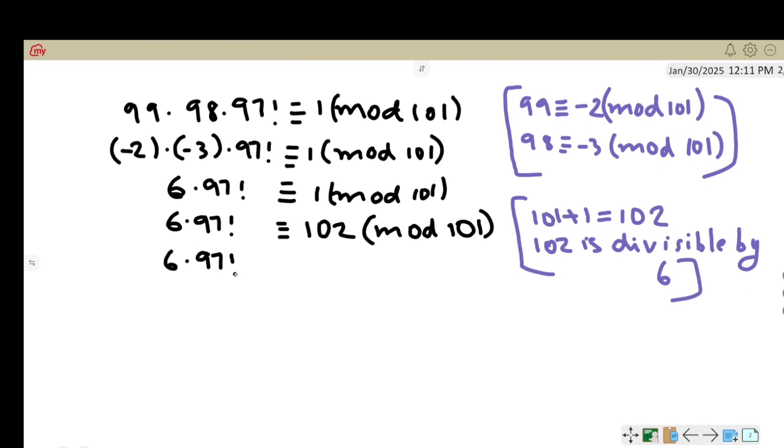6 times 97 factorial congruent to 6 times 17 mod 101, writing 102 as 6 times 17.